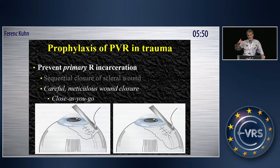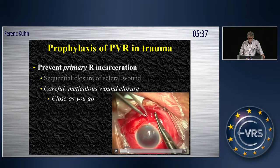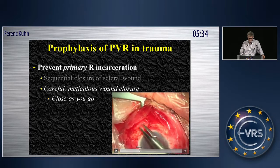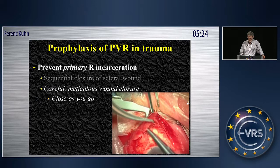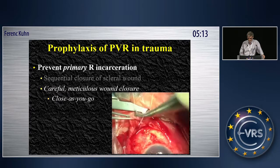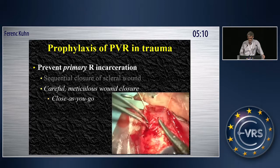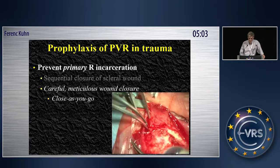As you go closer and closer to the posterior sclera, you have to stop somewhere and not catch tissue because you will cause more incarceration. What you see here is the conjunctiva is opened only anteriorly, and the sclera is closed underneath that area. Further opening of the conjunctiva does not come until the anterior aspect of the scleral wound is closed. So you go step by step more and more posteriorly in a two-step fashion: conjunctiva first, sclera second, conjunctiva again, sclera again.